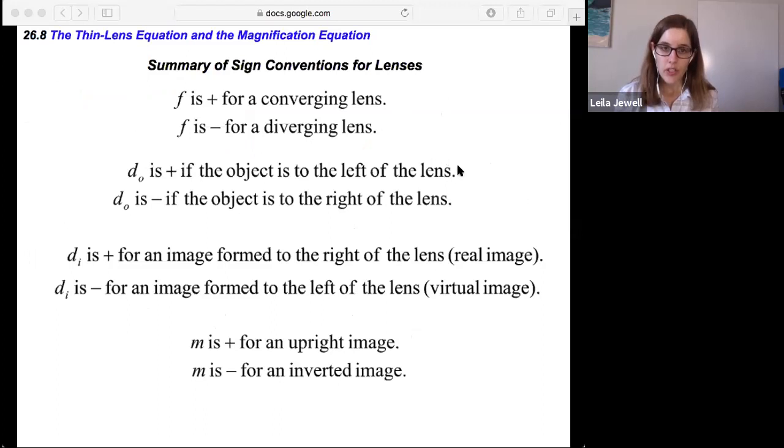So the focal f is going to be positive for a converging lens and negative for a diverging lens. The object distance is said to be positive if the object is to the left of the lens. And here, when we get into two lens systems, it will be possible for the object to be to the right of the lens and be negative. That's pretty weird though. In most cases, the object distance will be positive.